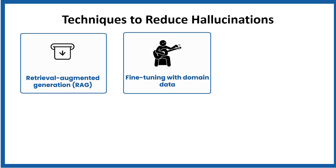Fine-tuning with domain data can reduce hallucinations. Fine-tuning a base model with domain-specific datasets — for example, medical records or financial data — ensures the model learns correct, precise patterns. The benefit is higher accuracy in specialized fields. The drawback is it is expensive and data hungry.